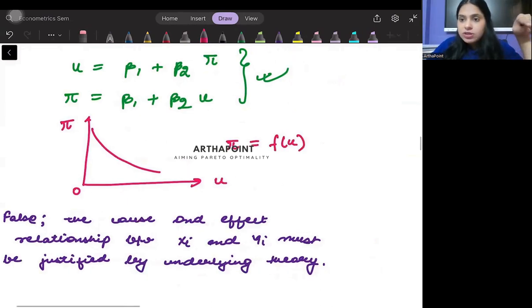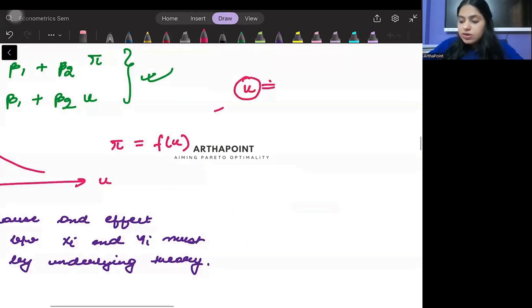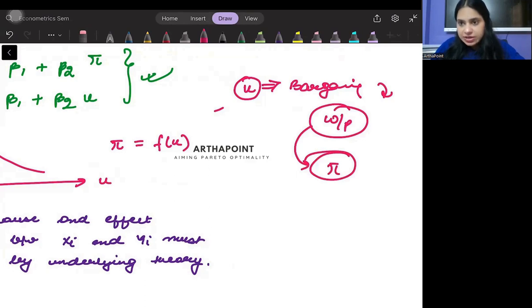It is macroeconomic theory which tells me that based on the unemployment rate, bargaining power is determined. Based on bargaining power, wages are determined. And based on that, inflation is determined.